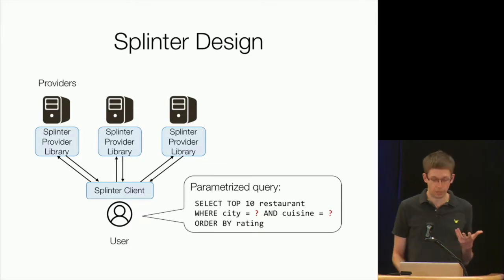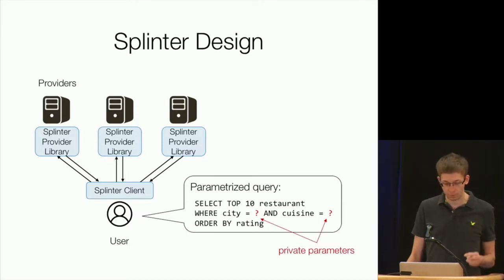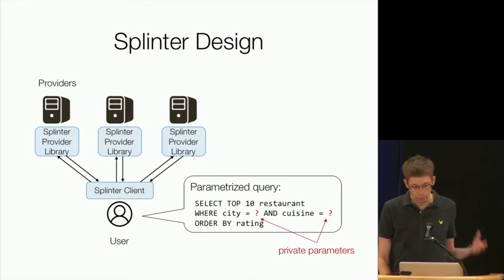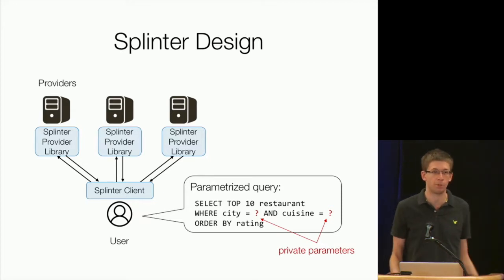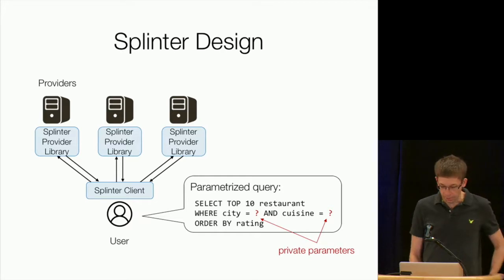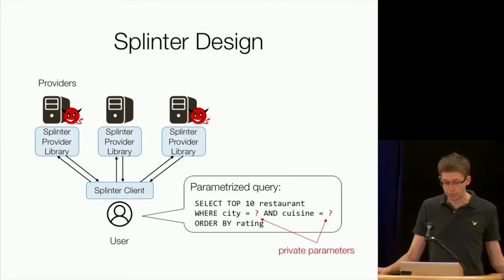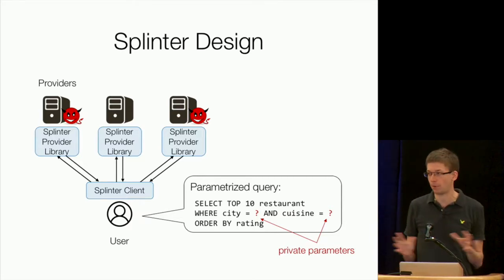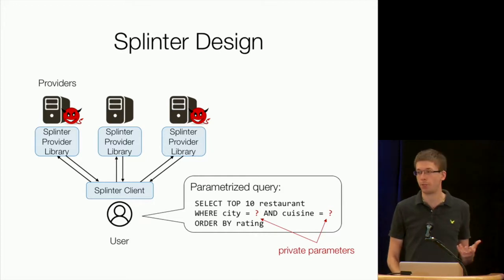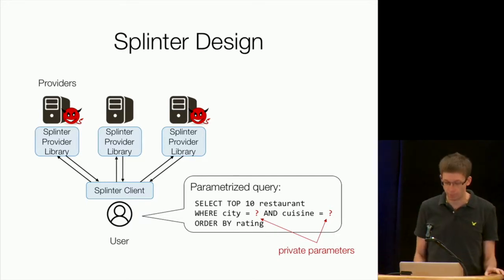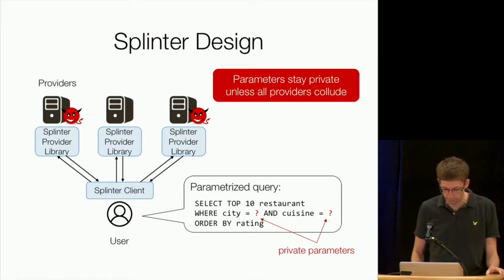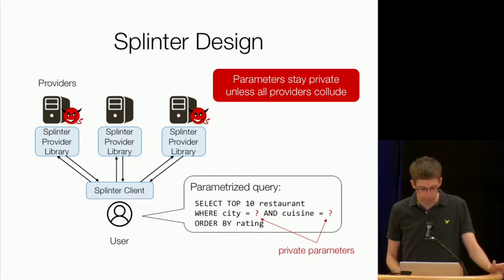So this is the design. We need several different providers which are independent. So they could be, for instance, two companies that both host an online map data set like OpenStreetMap, or they could be the same company with servers in different places. And the model we're envisioning is you pick the servers you like or you pick the companies you like whenever you do a query and you just need more than one. And then the user is going to make a parameterized query to these nodes. And basically, in the query, there are certain private parameters that we're hiding. For example, we're searching for restaurants on Yelp, but we don't want the service to know which city we're in and also which type of restaurant we like because maybe they'll be able to track us using that. So these are private parameters. And the trust model in Splinter is that any, basically, all but one of the servers can be malicious. So as long as one provider is honest and we do this protocol where we talk with all of them, the other ones can't figure out the parameters of the query.